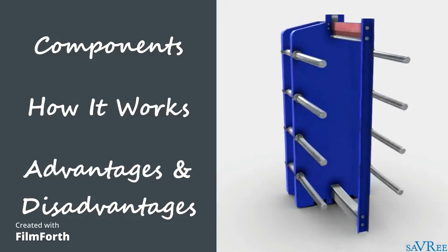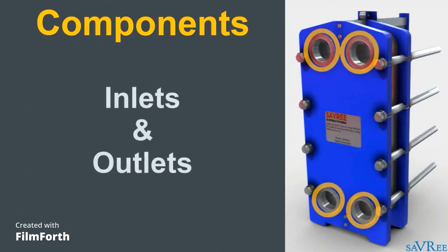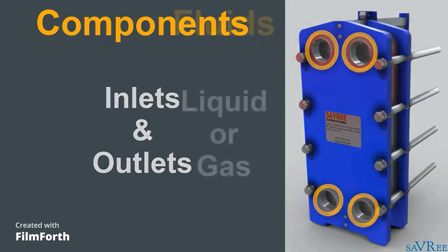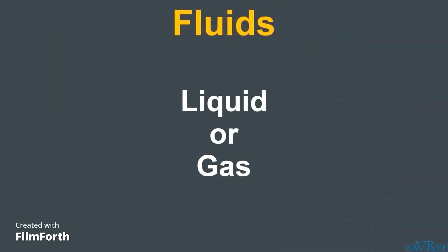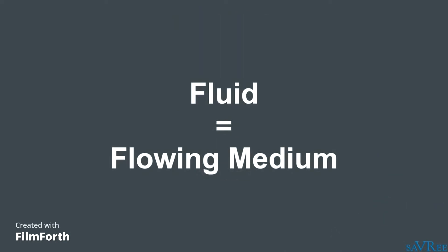Plate heat exchangers consist of relatively few parts. Because they are used for transferring heat, they require inlets and outlets where the flowing mediums, or fluids, can enter and leave the heat exchanger. A fluid may be a liquid or a gas. As fluids are often assumed to be liquid only, we will use the term 'flowing medium' to avoid confusion.